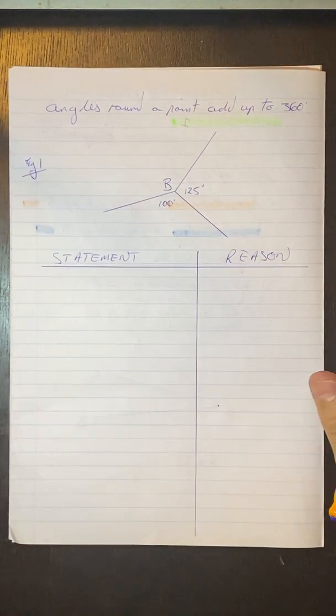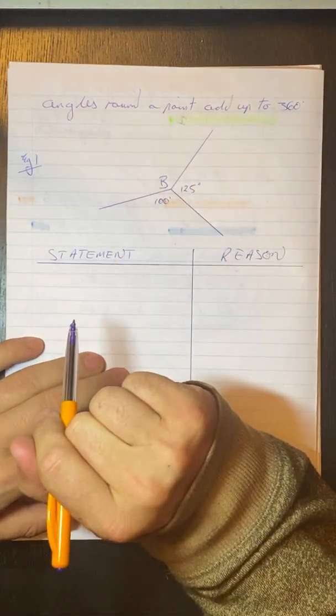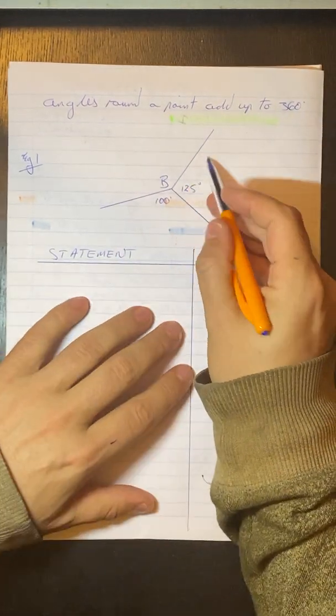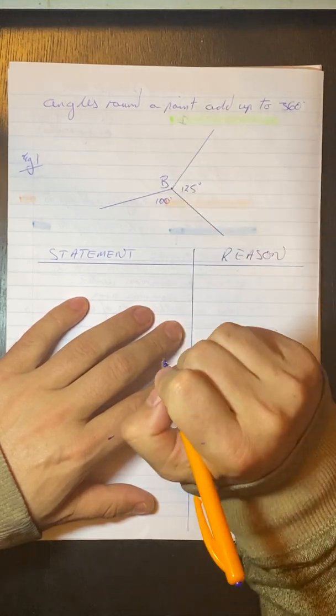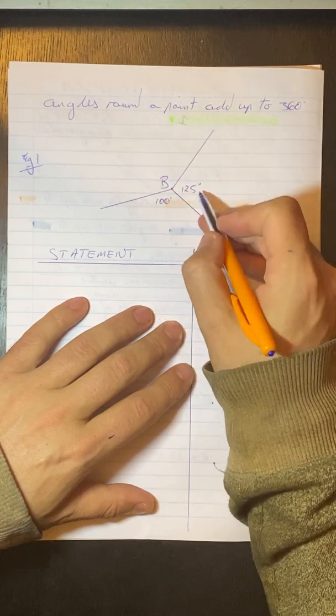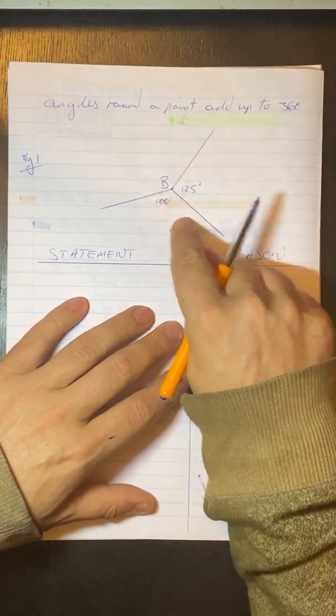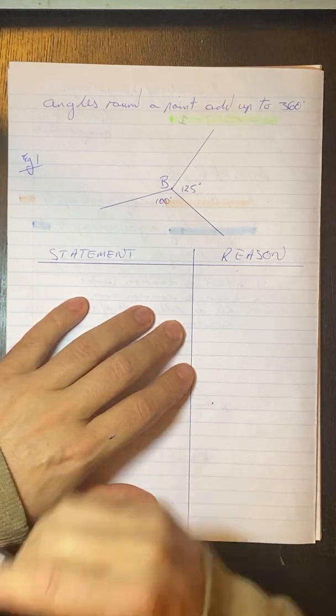Moving on. What we've got, which you guys learned last time, was angles around a point add up to 360. So if we have a look at this example here, here we've got this point right in the middle there, and we've got all of these angles around this point. So we know that all of these angles, if we had to add them up, would equal to 360 degrees.